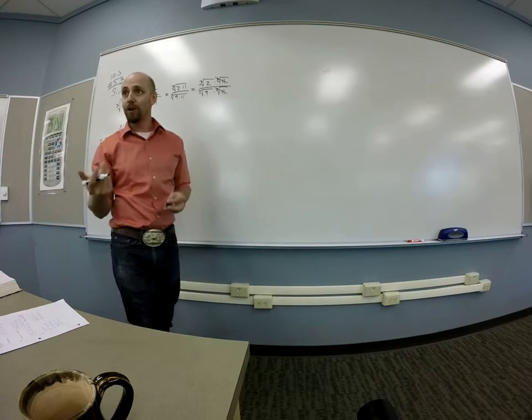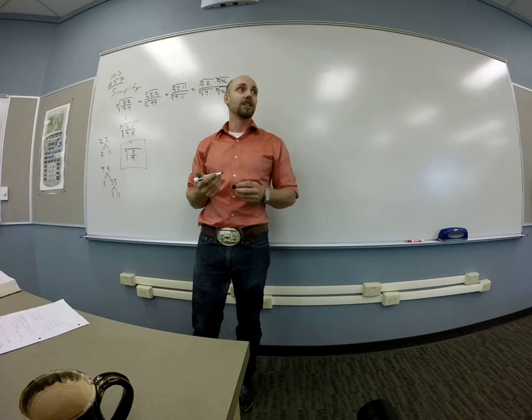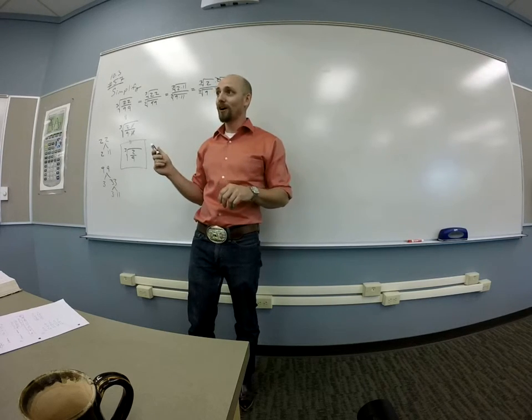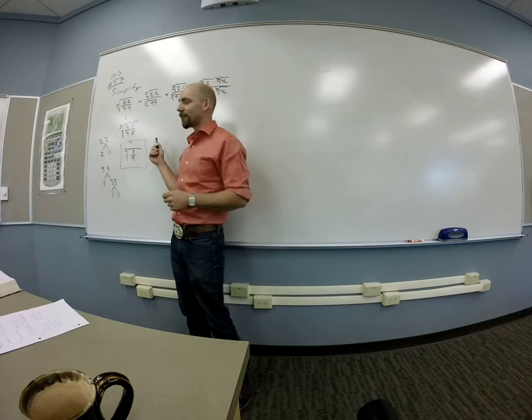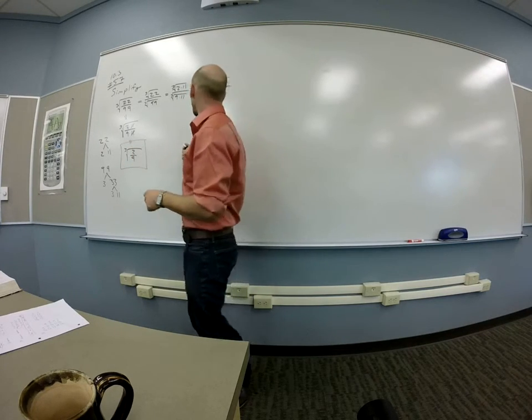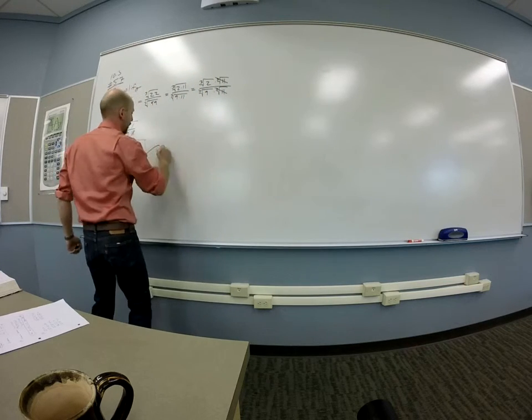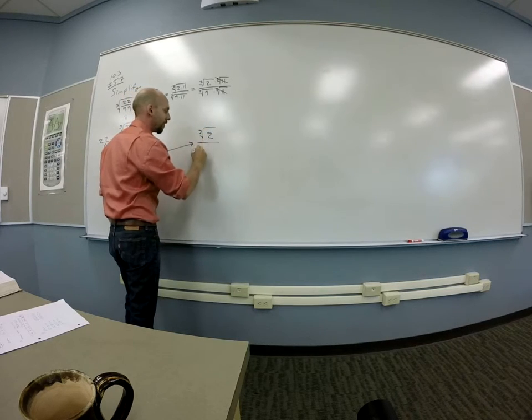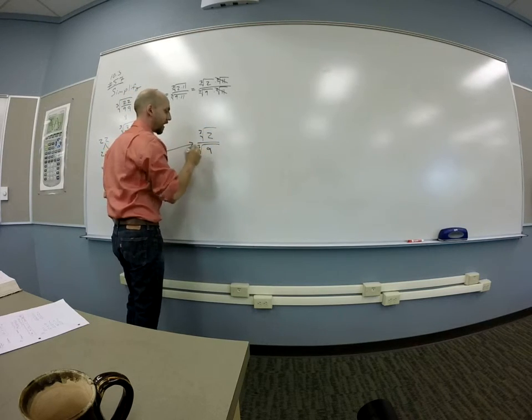Okay. So there's this technique your book gives you called rationalizing the denominator, right? I'm not a huge fan of this denominator word. But really what they mean is rationalize the bottom. Get the root out of the bottom, right? Okay. So if I look at this guy that I ended up with, this dude here is the cube root of 2 over the cube root of 9, right?